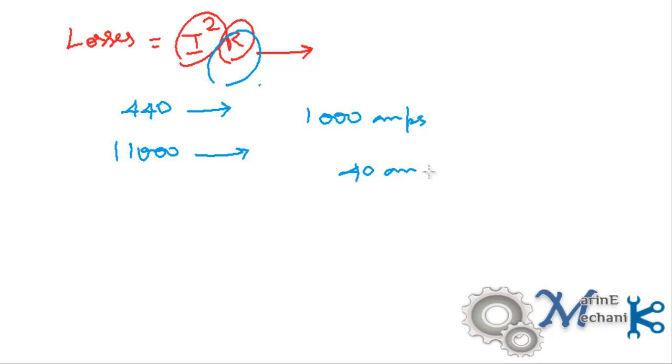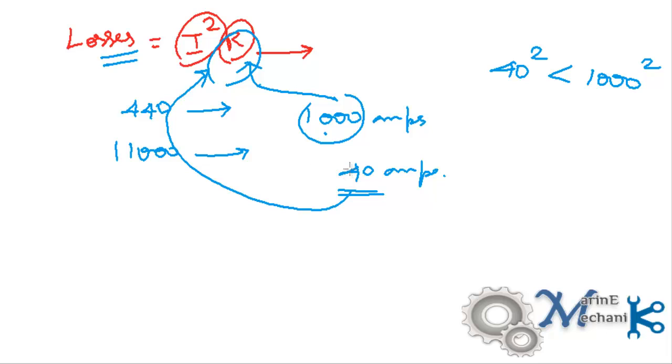With 440 volts we're going to have 1000 amp circuit, but with 11000 volts we have 40 amp circuit. If the amps is 1000, my losses are going to be 1000 square, which is huge. However, if I design my circuit for 40 amps, 40 square is comparatively very less. My losses completely depend on square of the current, and that's the reason we reduce the current by increasing the voltage.